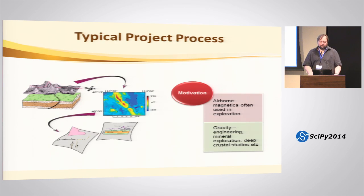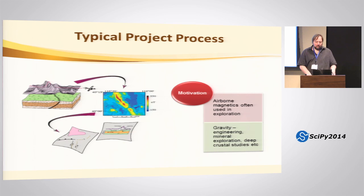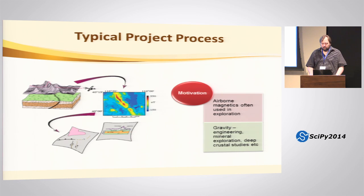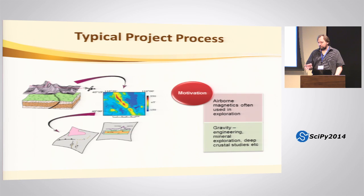This is a typical process that might be followed. It starts with data collection, then maps are made — in this case a magnetic map. From there, interpretation begins: an initial examination of the data where you can draw in faults and structures immediately. Then you go on to modelling selected features that are considered important or valuable. The data sets used most at the Council are airborne magnetics, mainly because they're the cheapest data set available.